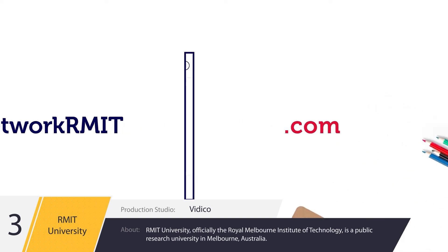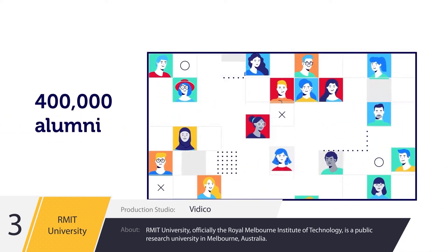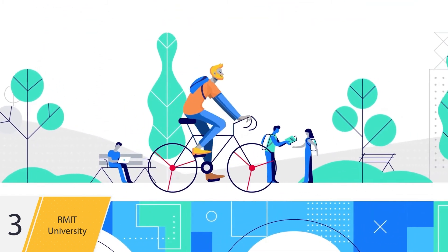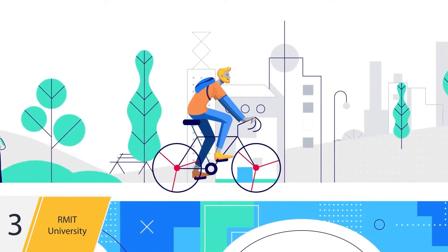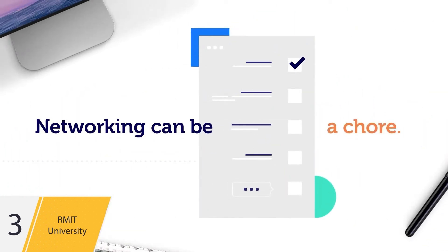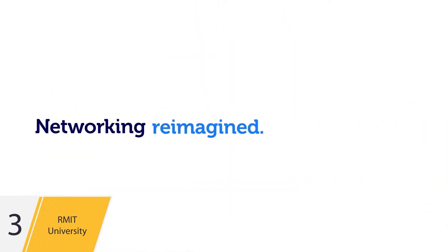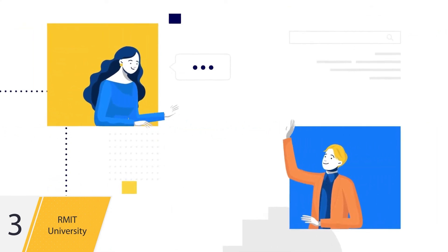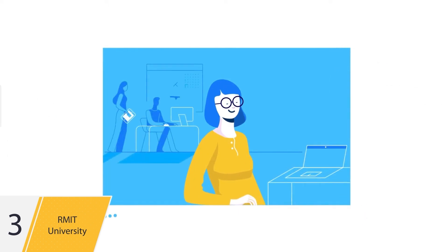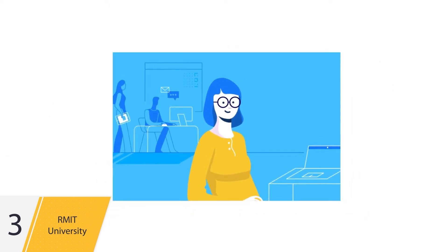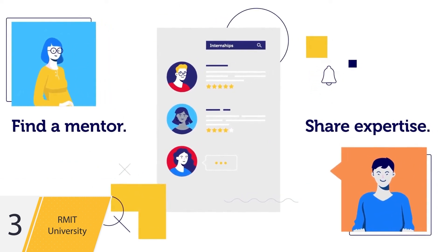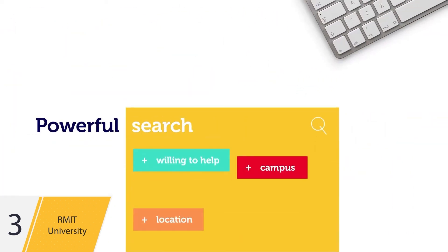Network RMIT is a place where over 400,000 alumni can come together and connect globally. It's an online platform that bridges the gap between university and industries. Networking can be a chore, but with Network RMIT you can find classmates, future employers, and last year's graduates for help with just about anything. It's a safe and collaborative space with a powerful and detailed search tool.